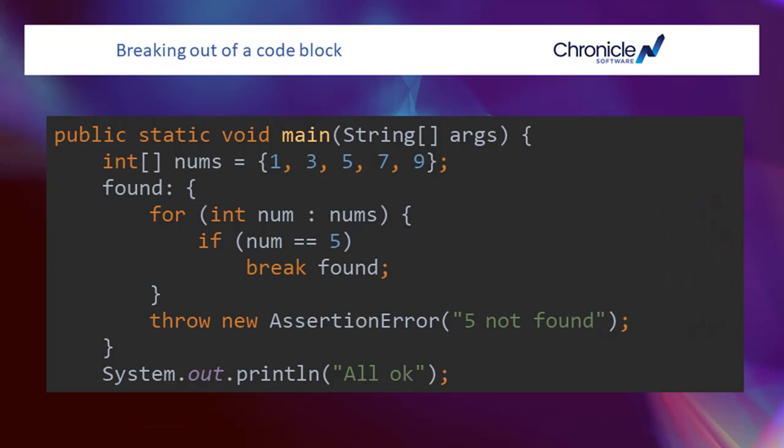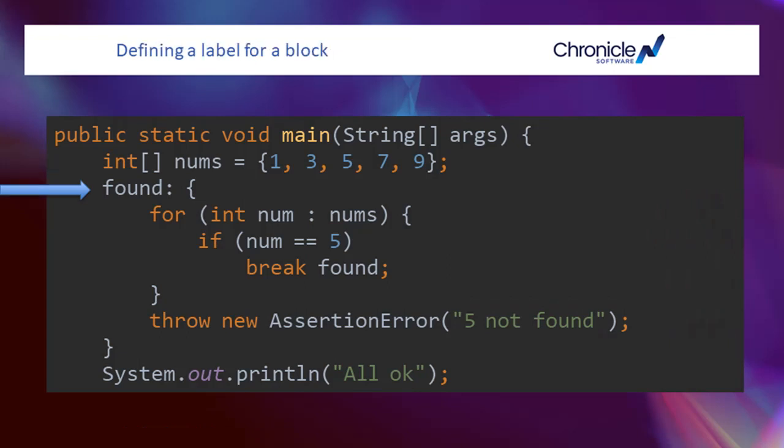Let's take this line by line. The code initializes an array of int values to process. This line has a label on it, which labels the block of code — which you will note is not a loop. This is a pattern I've sometimes used in the past that requires special handling when a condition is not met.